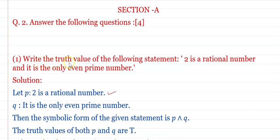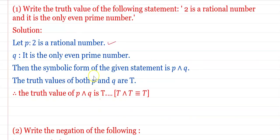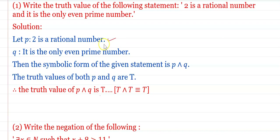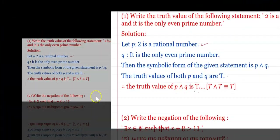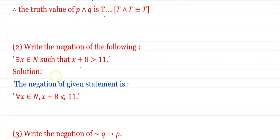Write the truth value of the following statement: '2 is a rational number and 2 is the only even prime number.' Let p: 2 is a rational number, q: 2 is the only even prime number. The symbolic form is p ∧ q. The truth value of both p and q are True. Therefore T ∧ T = T, and hence the truth value of the given statement is True.